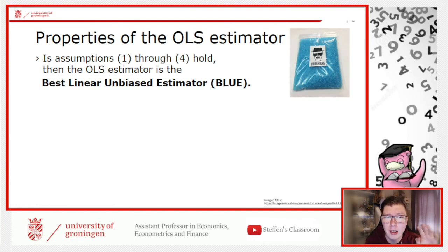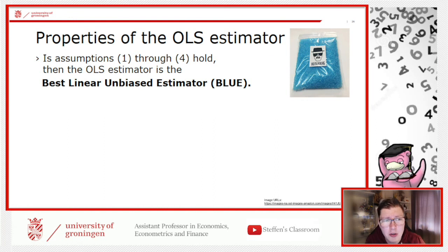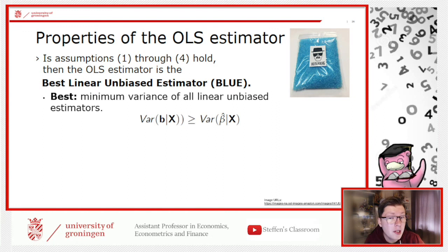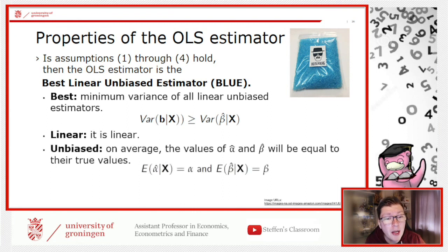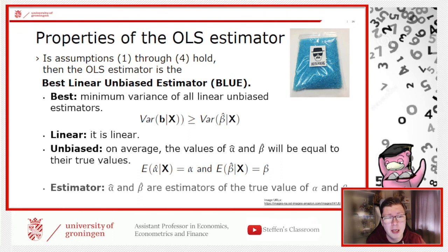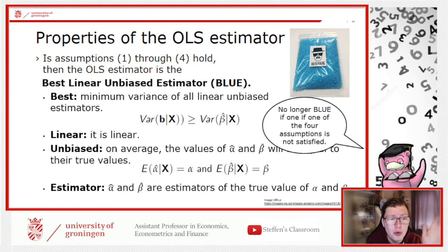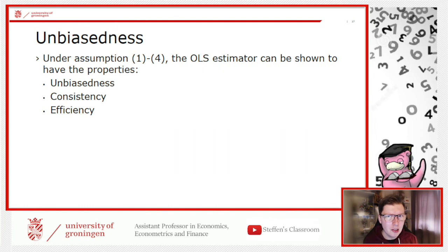If all four assumptions are fulfilled, OLS is the Best Linear Unbiased Estimator — BLUE. 'Best' means lowest variance of all linear unbiased estimators. 'Linear' we covered already. 'Unbiased' means on average equal to the true value — a little over, a little under, but correct on average. 'Estimator' refers to the fact that alpha-hat and beta-hat are estimates of the true values alpha and beta.